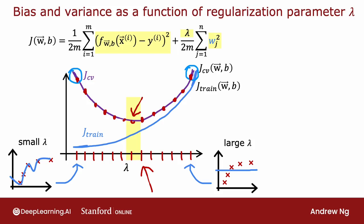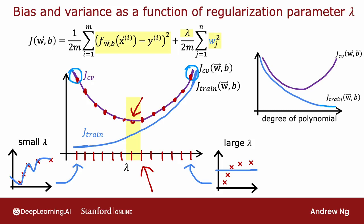Comparing this diagram to the one from the previous video where the horizontal axis was the degree of polynomial, these two diagrams look a little like mirror images of each other. When fitting a polynomial, the left part of that curve corresponded to underfitting and high bias, while the right corresponded to overfitting and high variance. In this diagram, high variance is on the left and high bias is on the right. But in both cases, cross-validation — evaluating different values — helps you choose a good value of D or a good value of lambda.